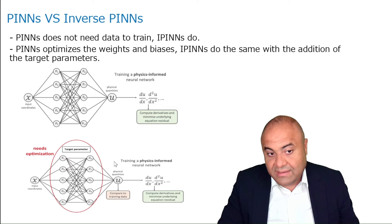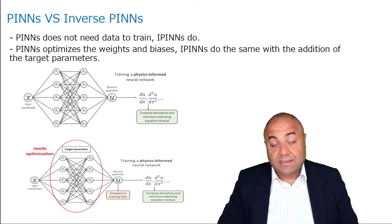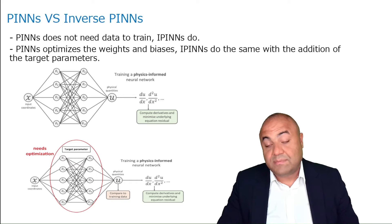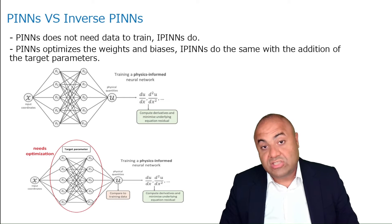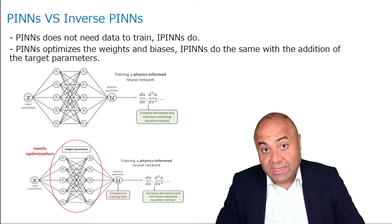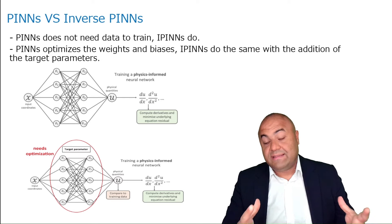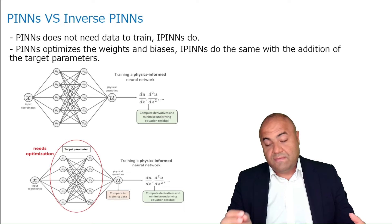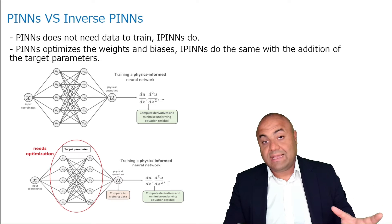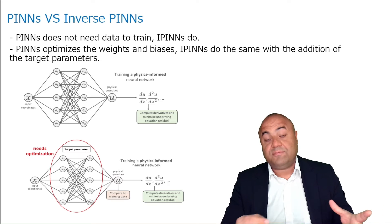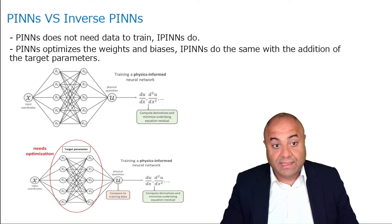We will add the hidden parameter as one of the optimization parameters. In a standard PINNs problem we optimize the weights and biases to compute the loss, but in inverse PINNs we add an additional parameter — the hidden parameter — that the network also needs to find. Using the data generated by this hidden parameter alongside the governing equations, we compute the loss and recover that hidden parameter. This is how we apply the inverse PINNs approach for the ODE.